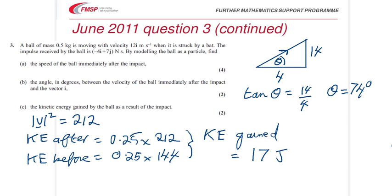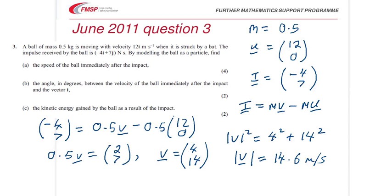As far as the mark allocation goes, let's go back to the start. There was an M1 for stating the impulse-momentum equation, an M1 A1 for using the vector equation here.